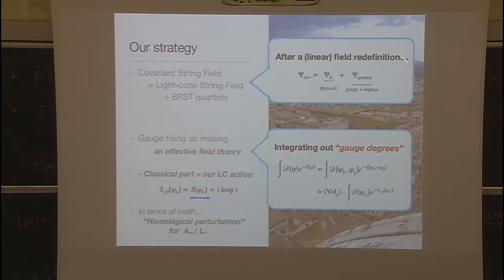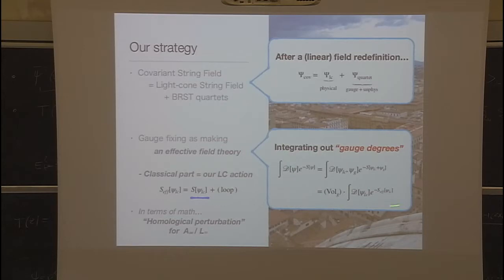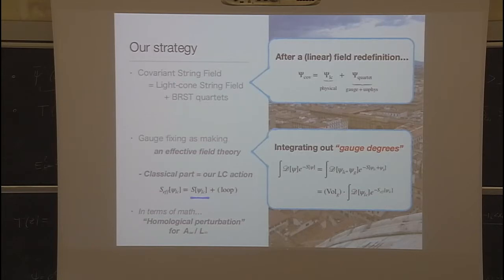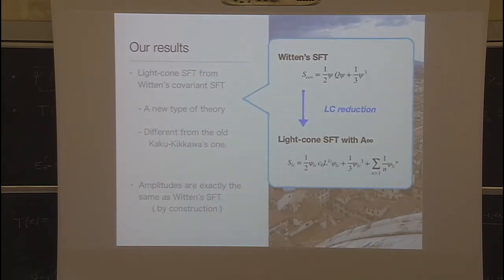After considering some linear field redefinition — which is just a change of CFT basis — we will find that the covariant string field splits into a light cone part and a BRST quartet. Then, like making an effective theory, we can integrate out the gauge degrees — the degrees of the BRST quartet. Then we obtain some effective action. The classical part of such an effective action gives the light cone version of Witten theory.